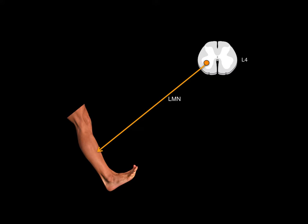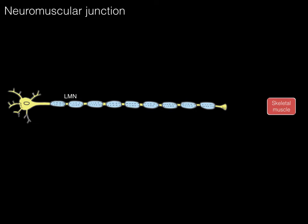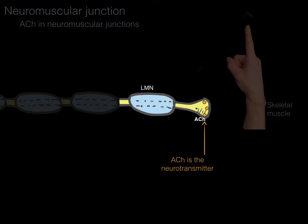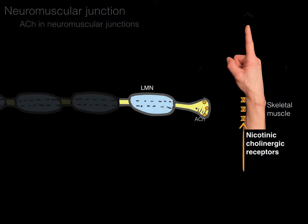This picture shows a cross-section of the L4 spinal cord level with a lower motor neuron in orange synapsing with the muscle at the neuromuscular junction. Replacing that neuron with a lower motor neuron — at the neuromuscular junction, acetylcholine is the neurotransmitter that acts. We'll zoom in on this lower motor neuron and skeletal muscle.